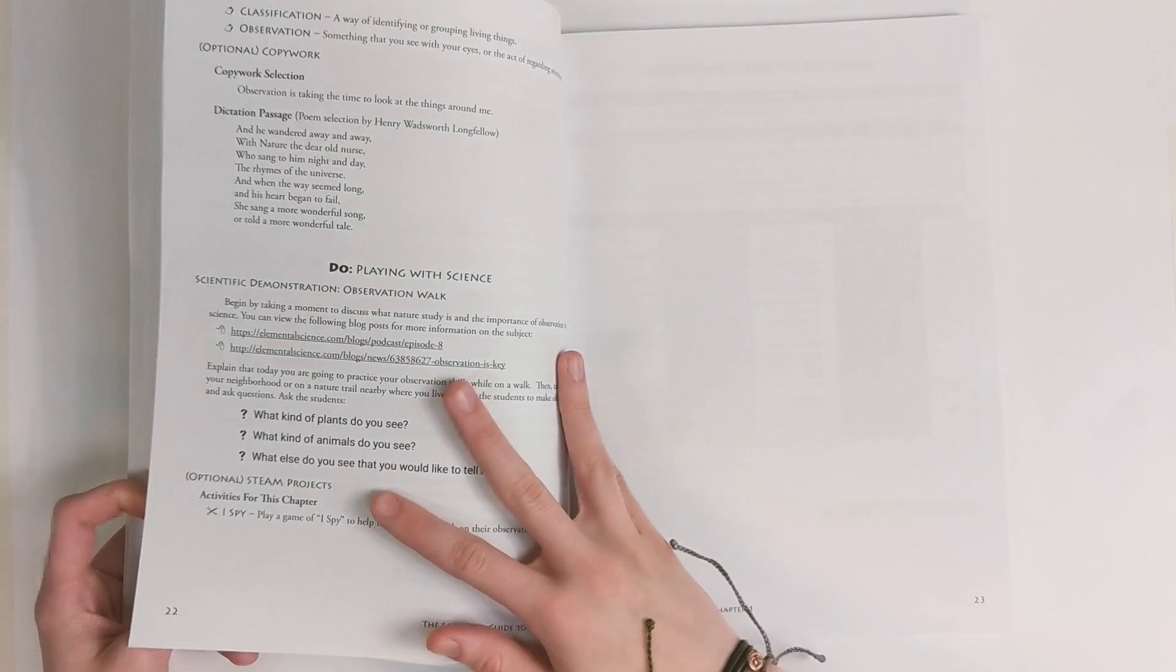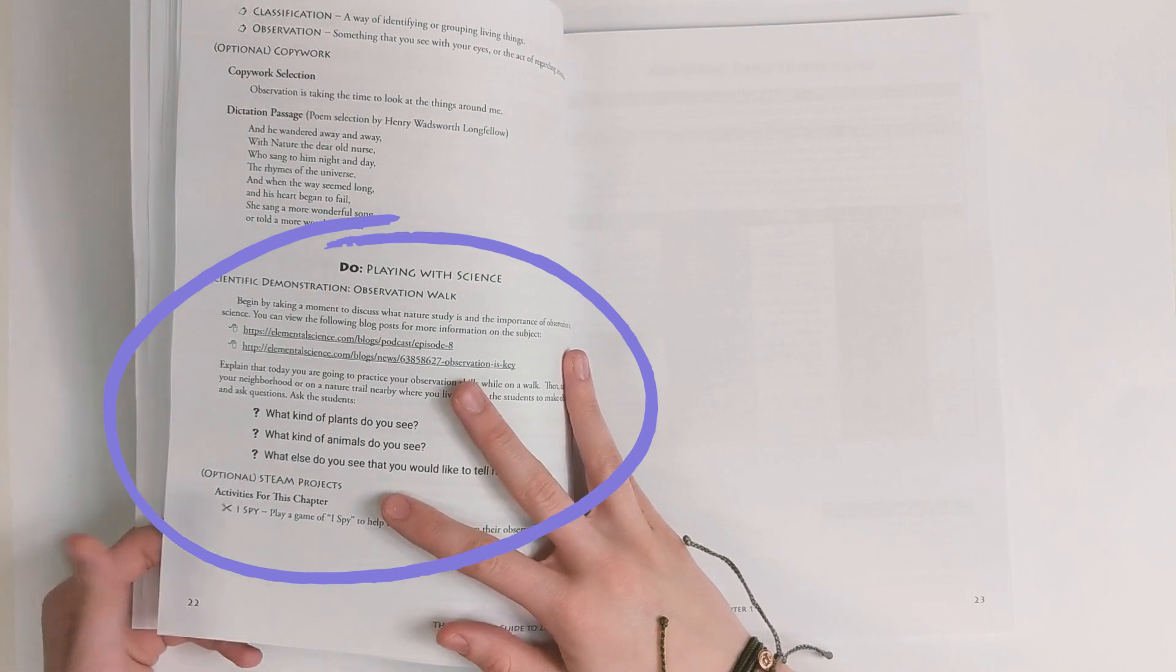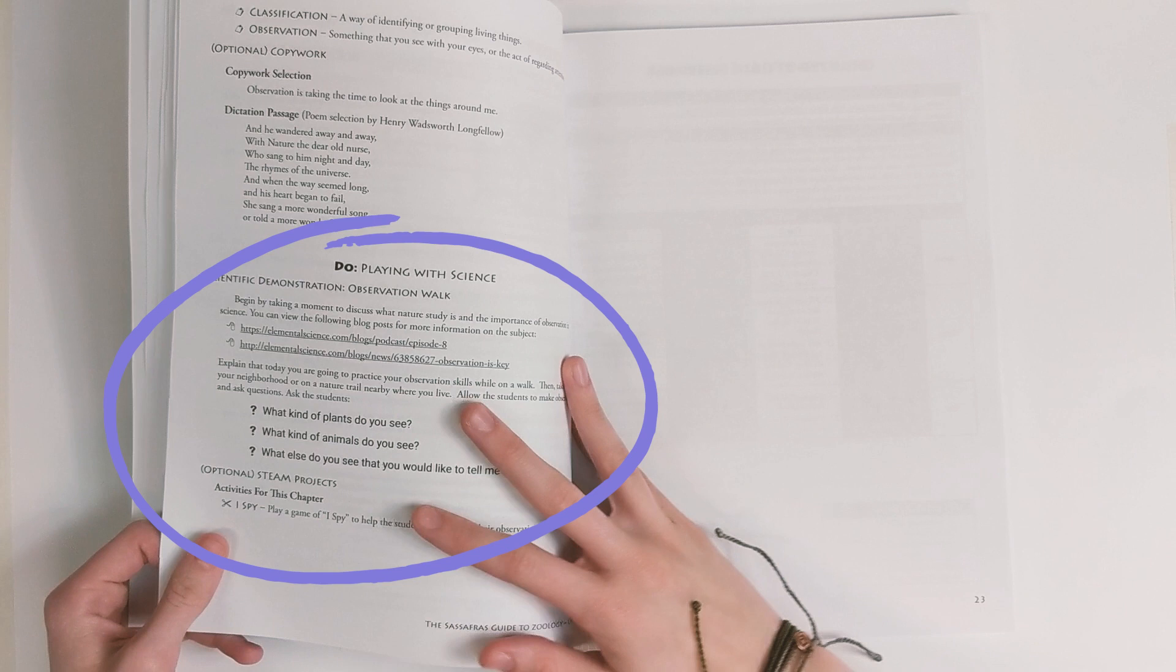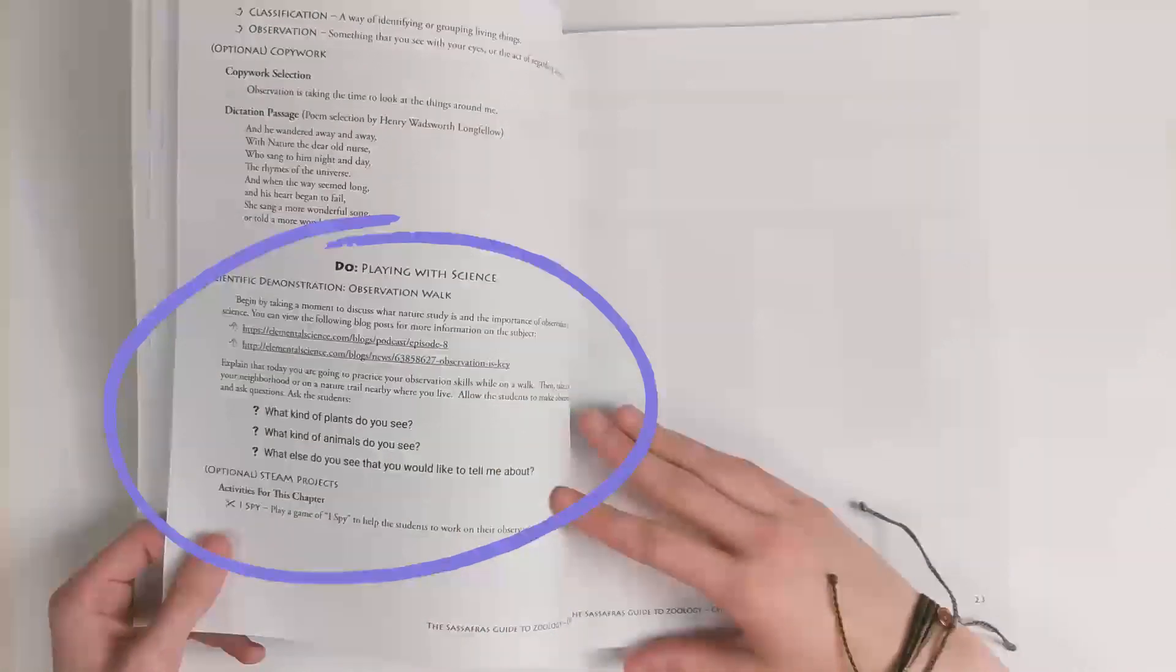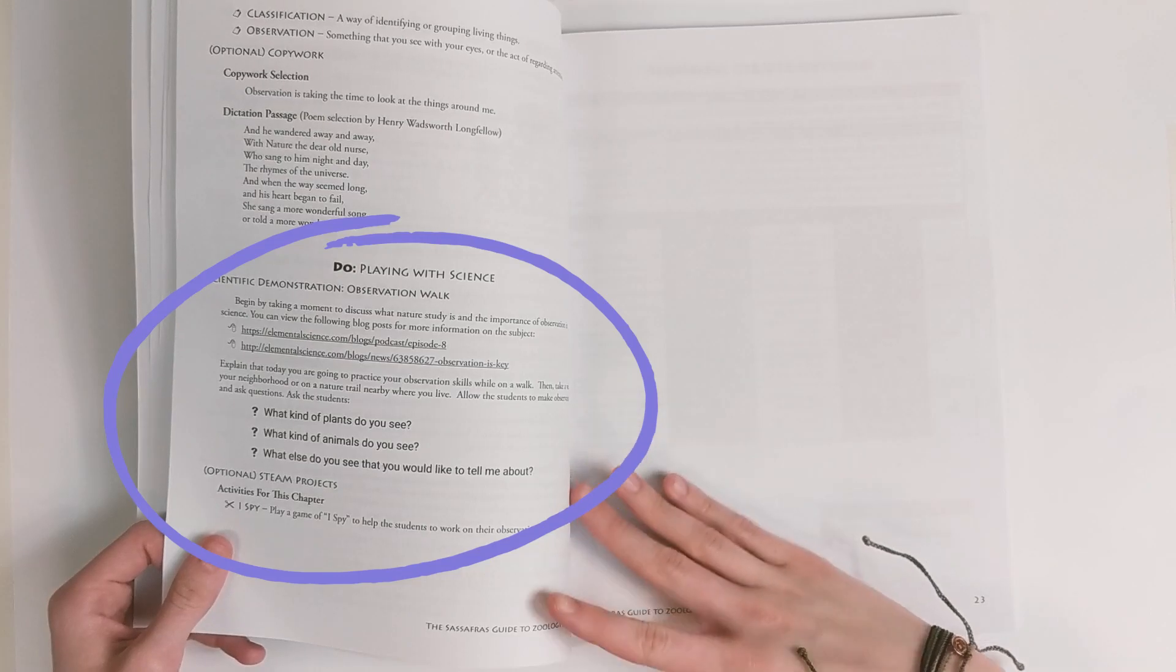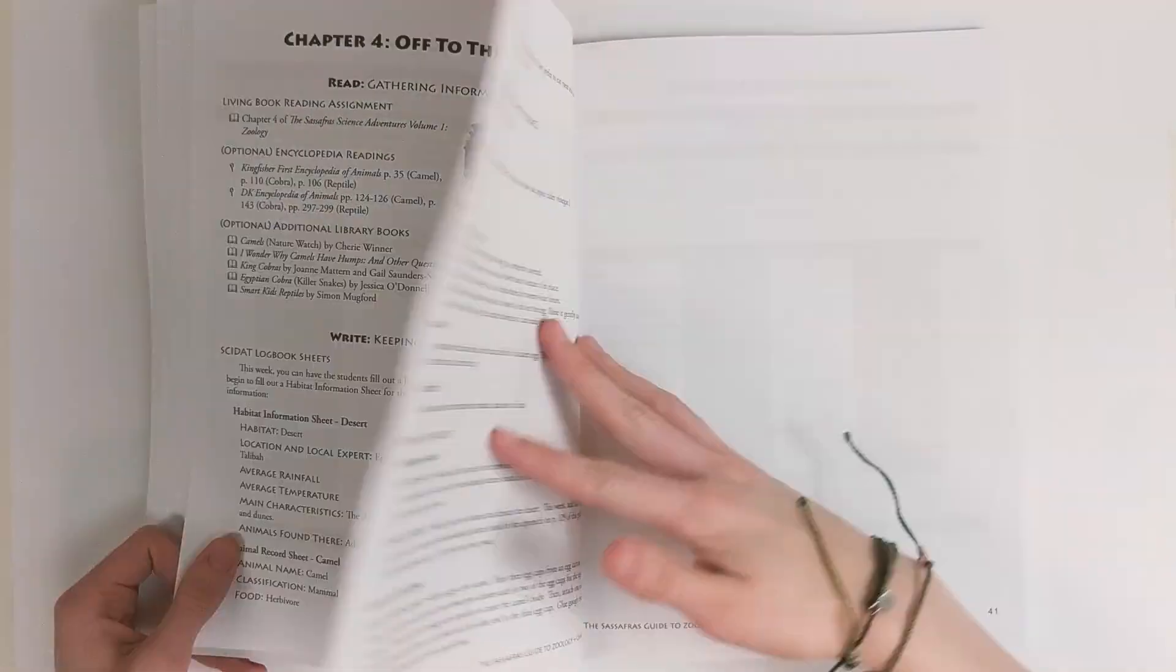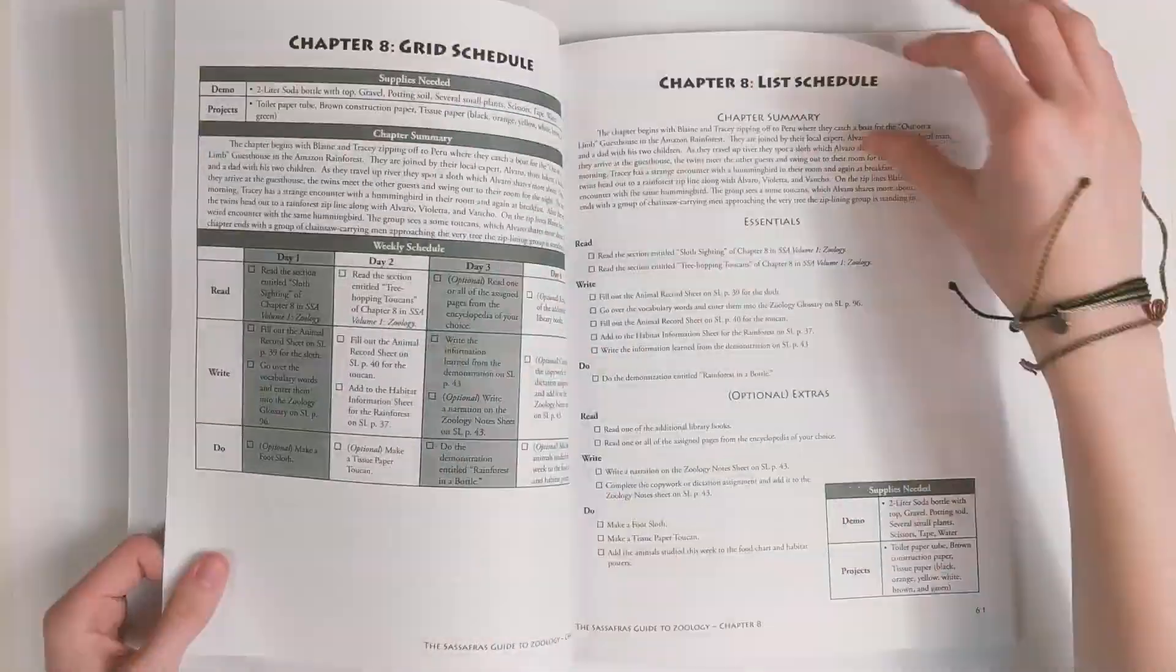After the write section is the do section in your teacher materials. This will contain a related scientific demonstration. It will list the supplies you need and easy-to-follow steps and explanations to make it a snap to complete the scientific demonstration. After that, you'll find optional activities and projects that you can use with the chapter. Every chapter in the Activity Guide follows the same format, giving you what you need to create a full science curriculum around the novel.